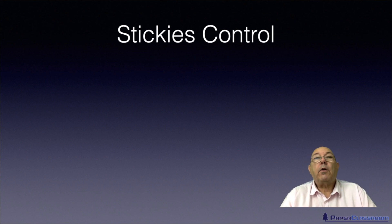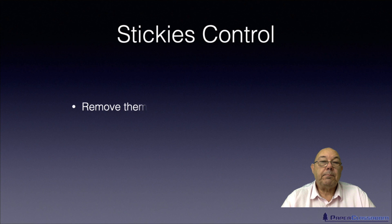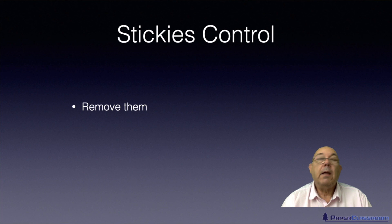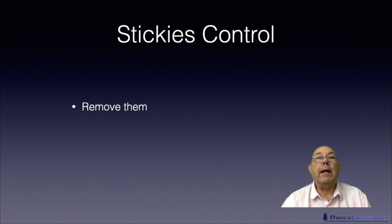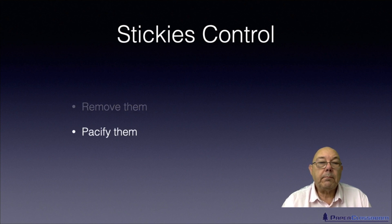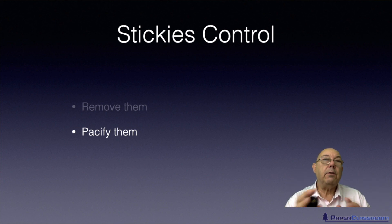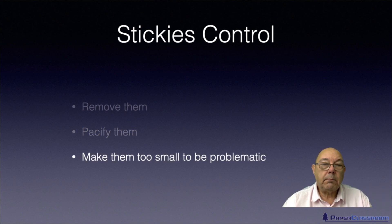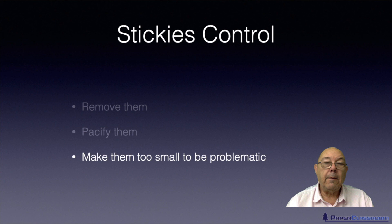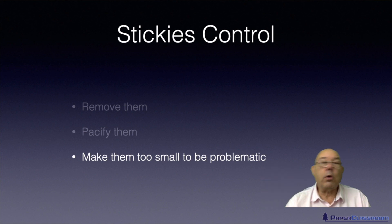So how do we control stickies? One approach is to remove them from the system completely, but if you do that you'll get an ever-increasing pile on your land which will eventually have to be removed. You could pacify them — make the surface of the sticky non-sticky. Or, the fashionable way, you could make them so small that they actually go out with the product and because they're so small they don't cause any problems.